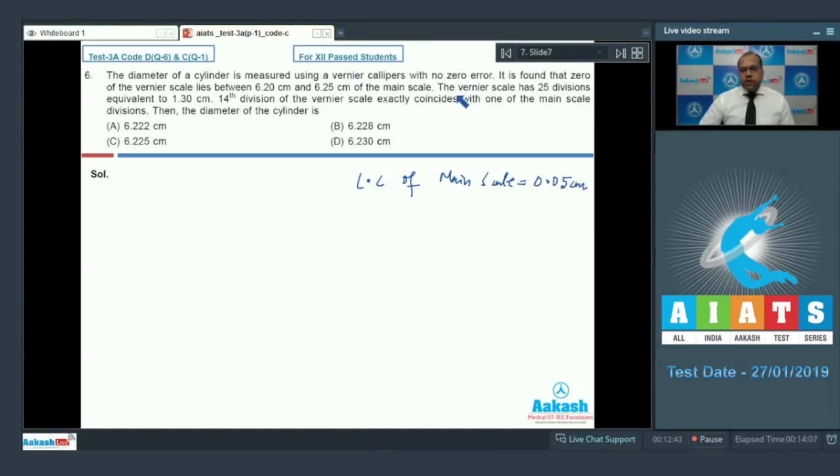Further it is given in the question the vernier scale has 25 divisions equivalent to 1.30 cm. It means that one division of vernier scale is equal to 1.3 divided by 25. So if I solve this, it comes out to be 0.052 cm.